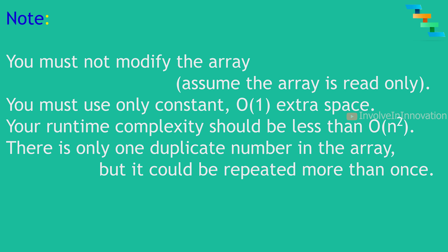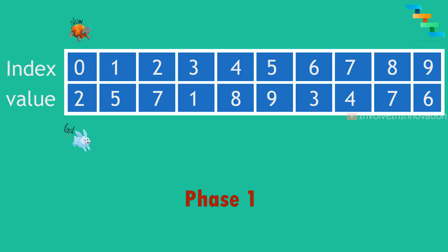The Floyd algorithm consists of two phases. Given the input array [2,5,7,1,8,9,3,4,4,7,6], we initialize the fast and slow pointers — the tortoise and hare — both at index 0. For each iteration the slow pointer moves one step and the fast pointer moves two steps. The hare, moving faster, enters the cycle first and gets caught in it, then the tortoise follows and they meet at some intersection point. This is Phase 1.